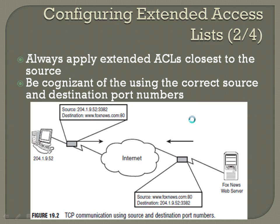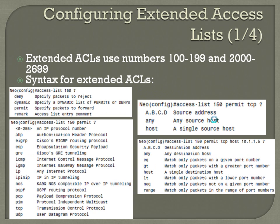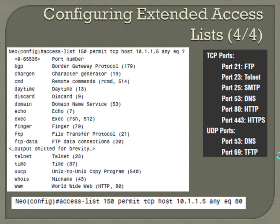If you were to take it a step further and type: access-list 150 permit TCP host, your IP address, any — then a question mark gives you a whole list of your next options. Continuing from there, they chose 'equal to,' and you can put a specific port number, which is exactly what they did in this particular instance.